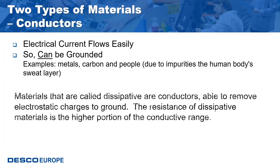There are two types of materials, the first being conductors. Conductors allow electrical current to flow easily, so they can be grounded. Examples of conductors are metals, carbons, and people — due to the impurities of the human body's sweat layer. Materials called dissipative are also conductors and are able to remove electrostatic charges to ground, though their resistance is in the higher portion of the conductive range.